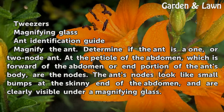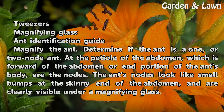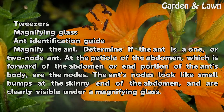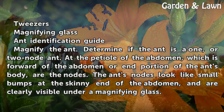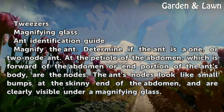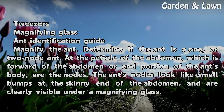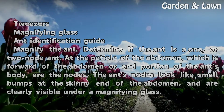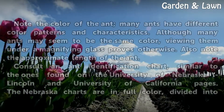Magnify the ant. Determine if the ant is a one- or two-node ant. At the petiole of the abdomen, which is forward of the abdomen or gaster portion of the ant's body, are the nodes. The ant's nodes look like small bumps at the skinny end of the abdomen, and are clearly visible under a magnifying glass.